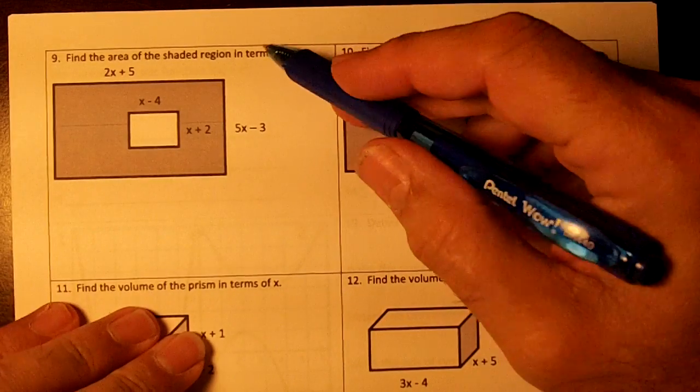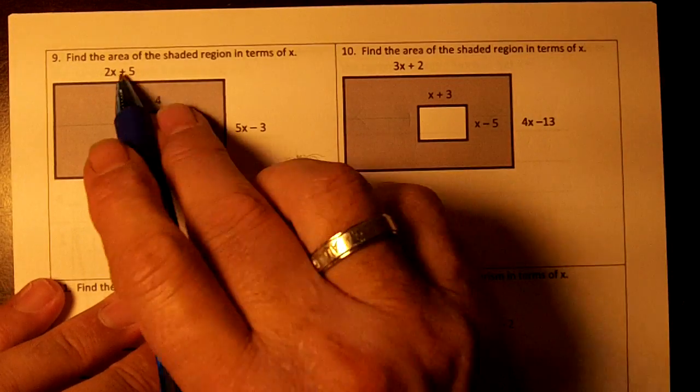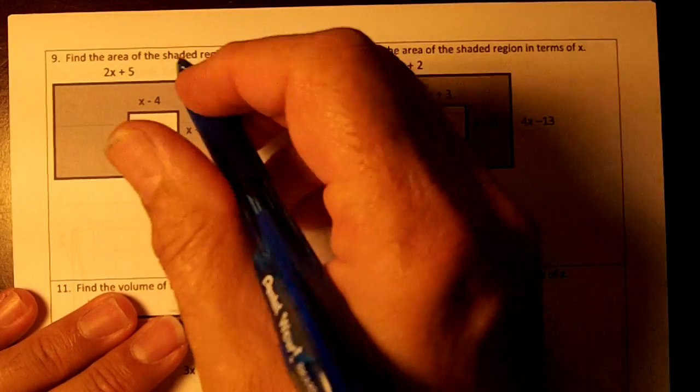Okay, number 9 and number 10, find the area of the shaded region. So we're going to get the areas of the rectangle and subtract.